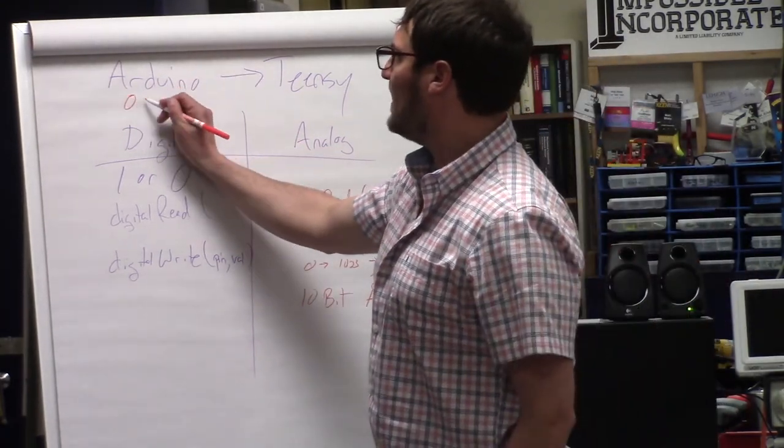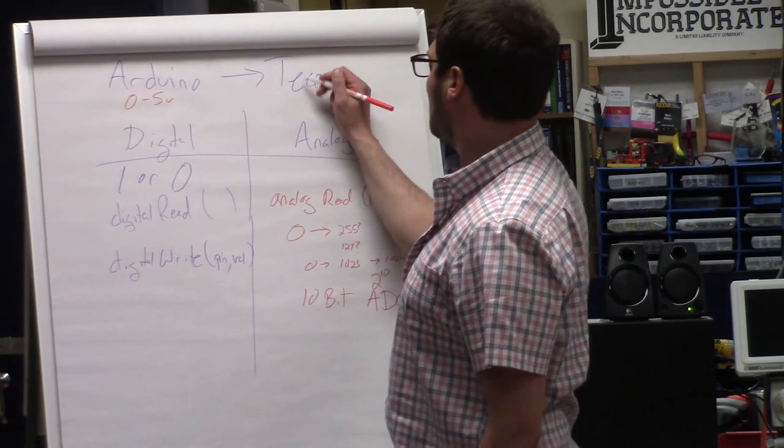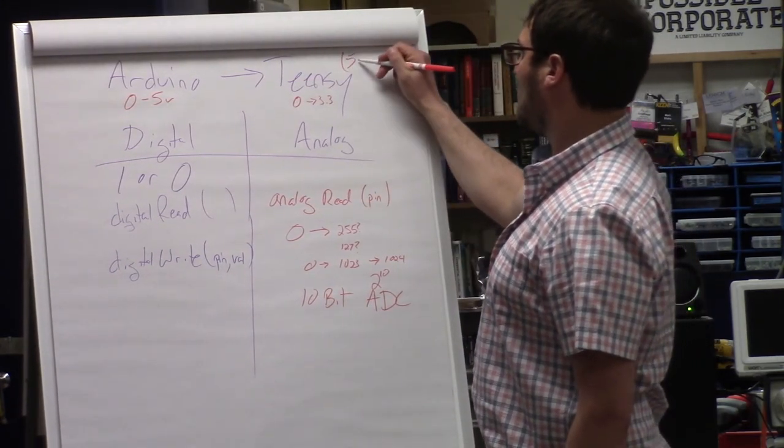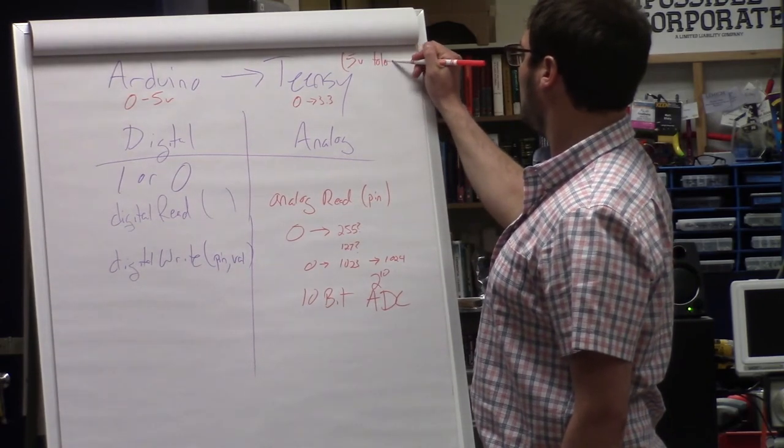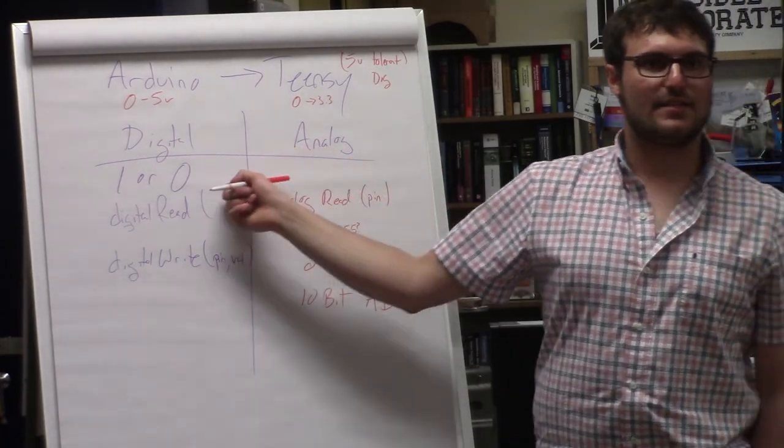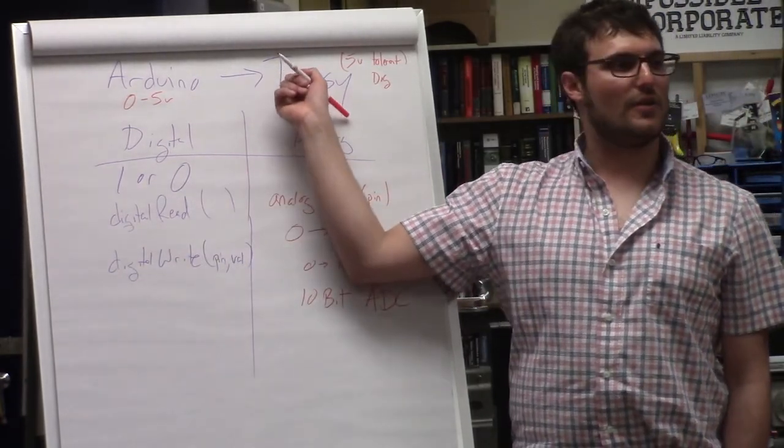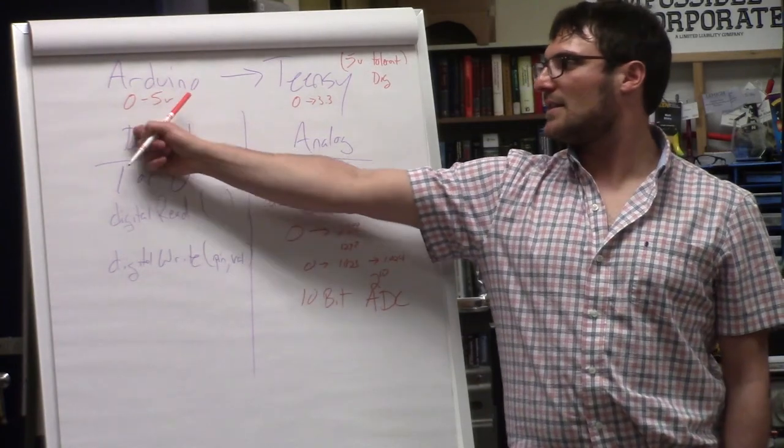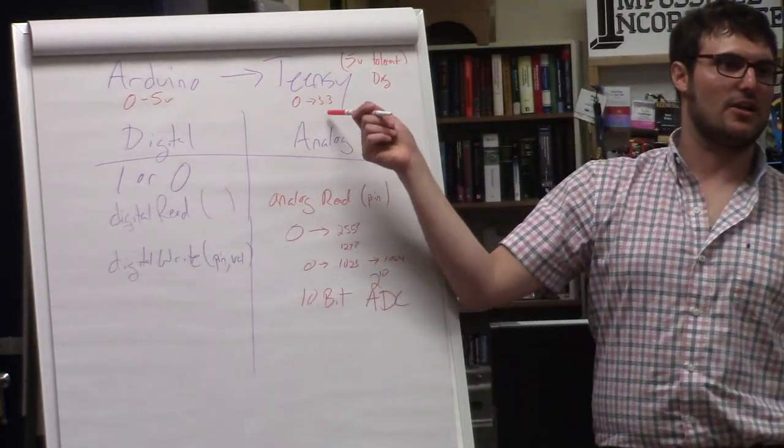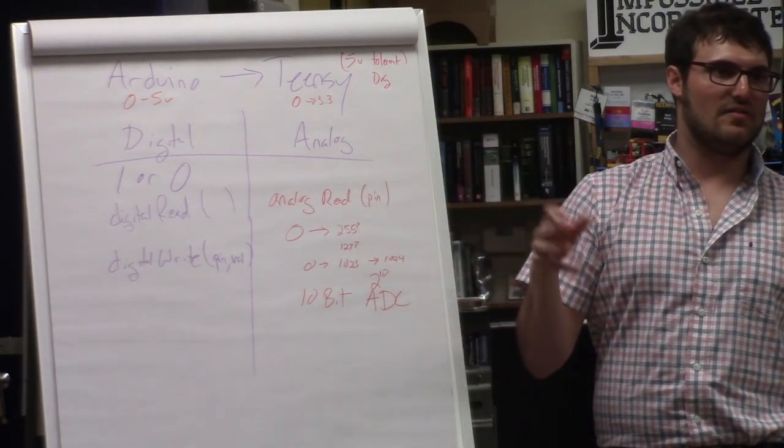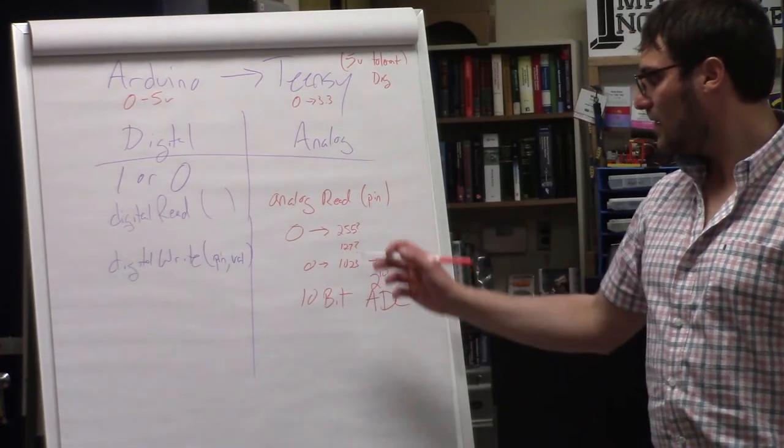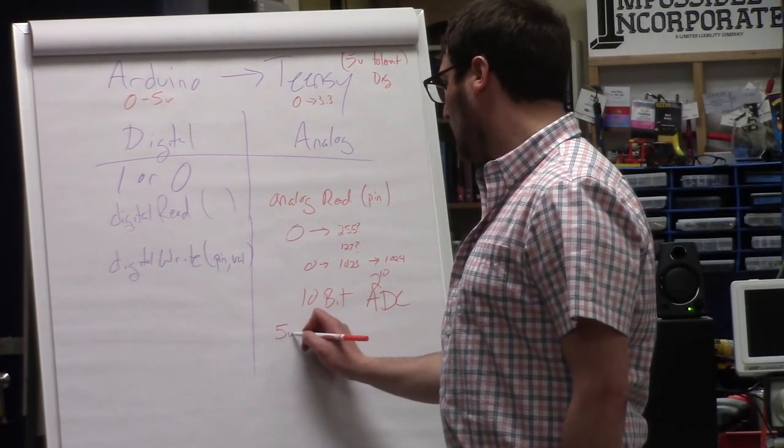So Arduino can read things from 0 to 5 volts. Teensy goes from 0 to 3.3 volts. Now this is what we call 5-volt tolerance for digital. So digitally, it thinks a 0 is a 0, 3.3 volts is a 1. Arduino thinks a 0 is a 0, 5 volts is a 1. But the Teensy says, some things are going to give me 5 volts, I'm going to be okay with it if it's digital. But if it's analog, I'm going to get really pissed off.